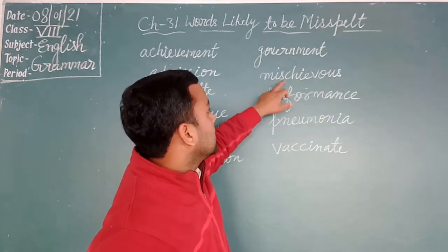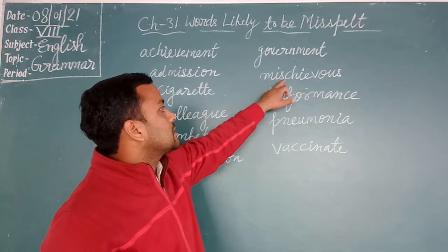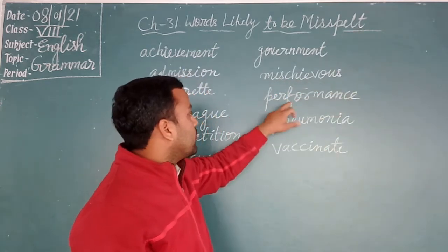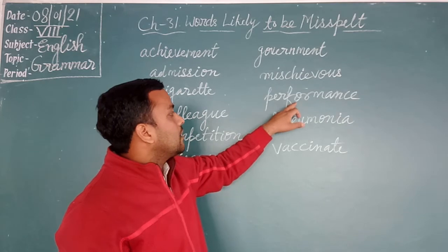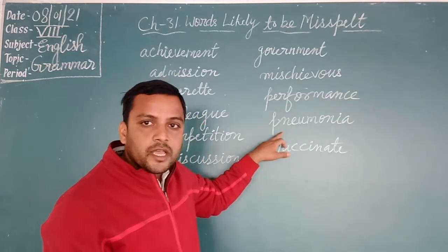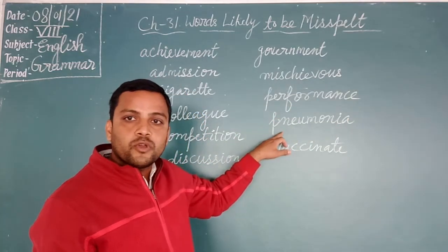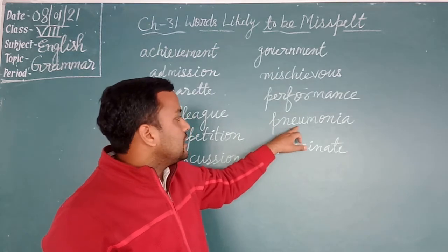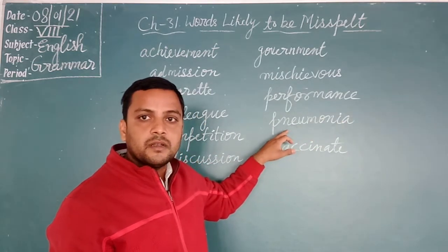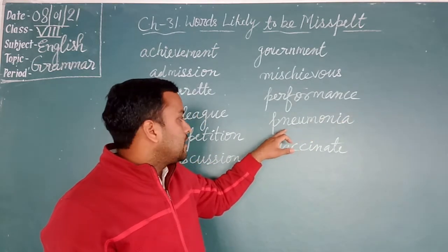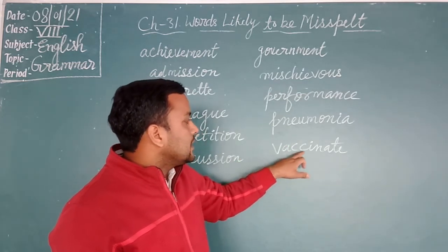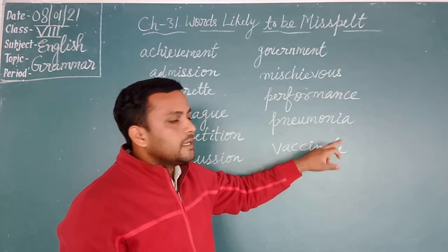Immigrant. Mysterious: M-Y-S-T-E-R-I-O-U-S. Performance: P-E-R-F-O-R-M-A-N-C-E. Pneumonia: P-N-E-U-M-O-N-I-A. It starts with P. Vacant.